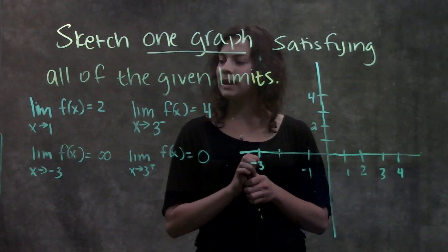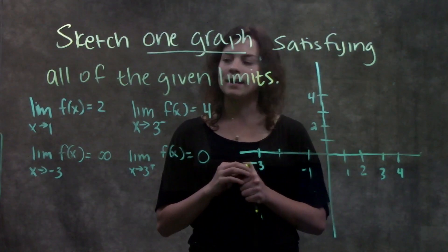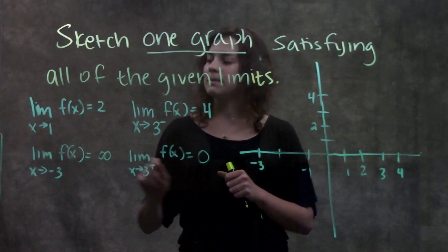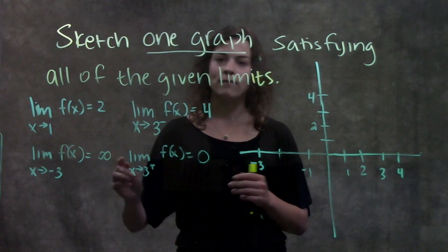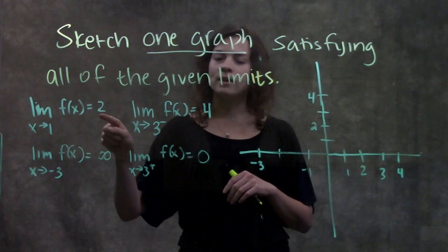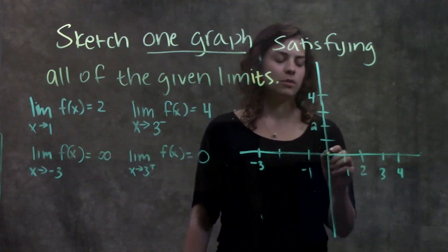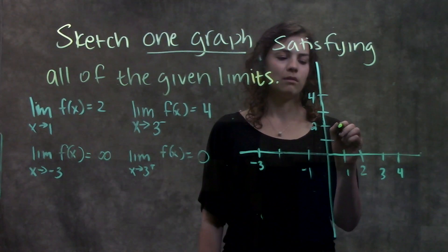Our first limit says the limit as x approaches 1 of f(x) is equal to 2. That means as our x values are approaching 1 from both sides, our y value is going to be approaching 2. We go to x equals 1, we go up to 2, draw a circle.